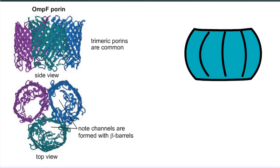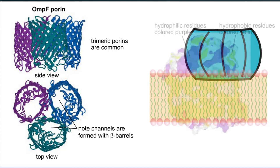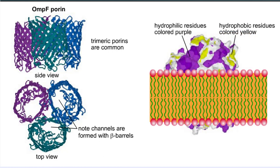Porins form aqueous channels and accelerate the passive diffusion of small hydrophilic molecules across the membrane. They are found as monomers or trimers in the outer membranes of gram-negative bacteria, as well as the mitochondria and chloroplasts of eukaryotic cells.